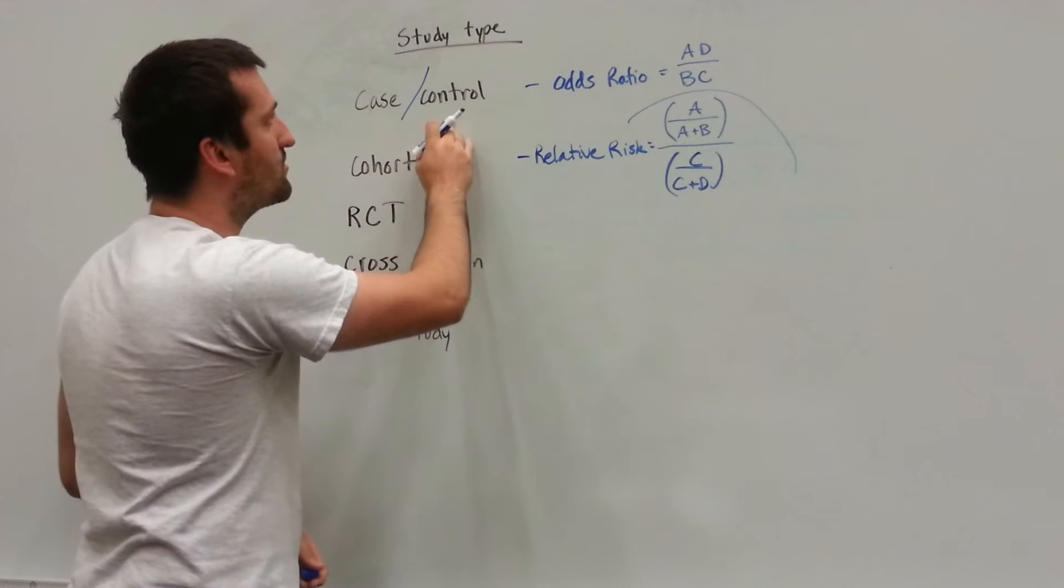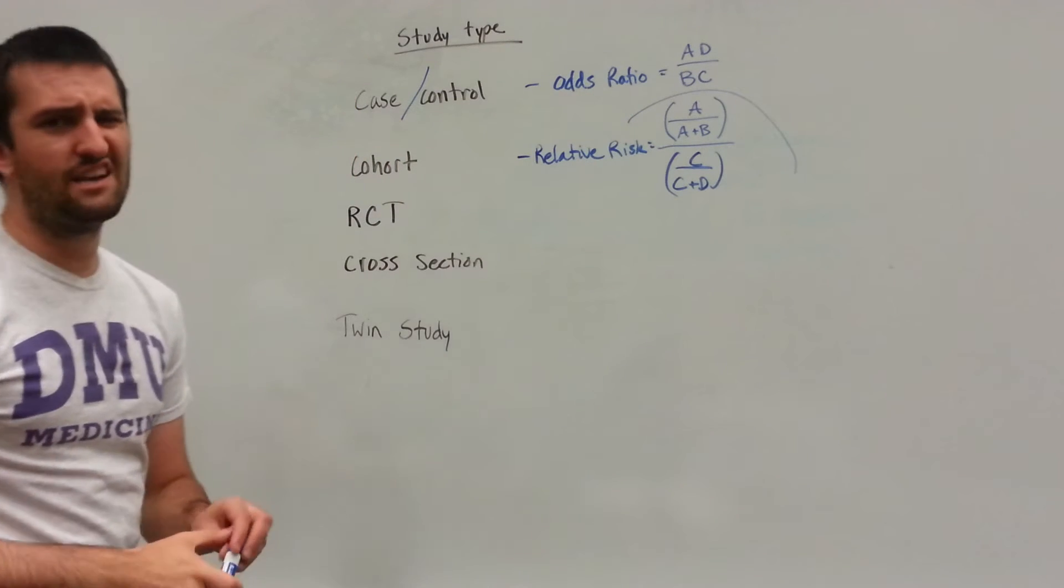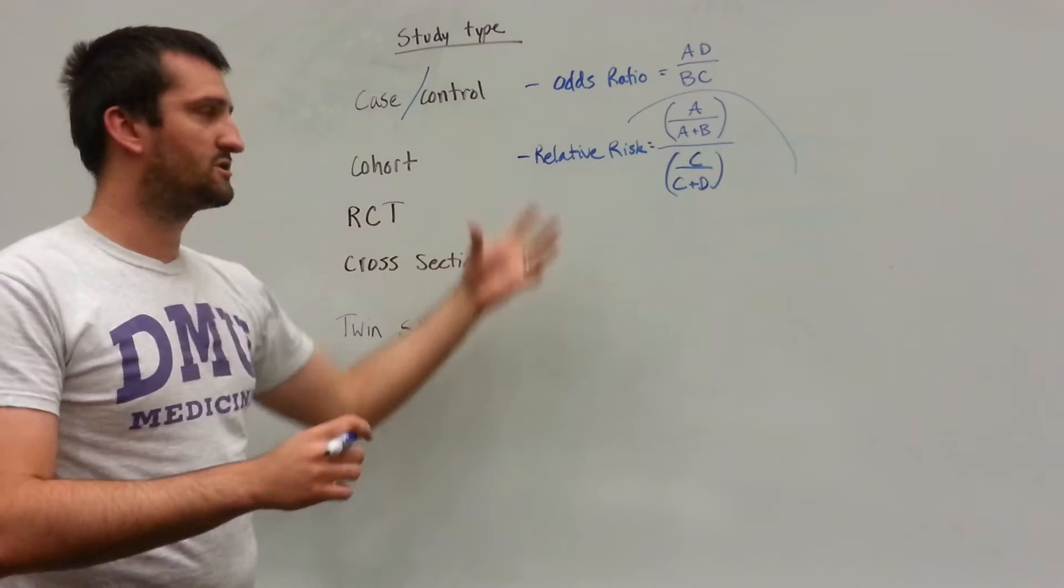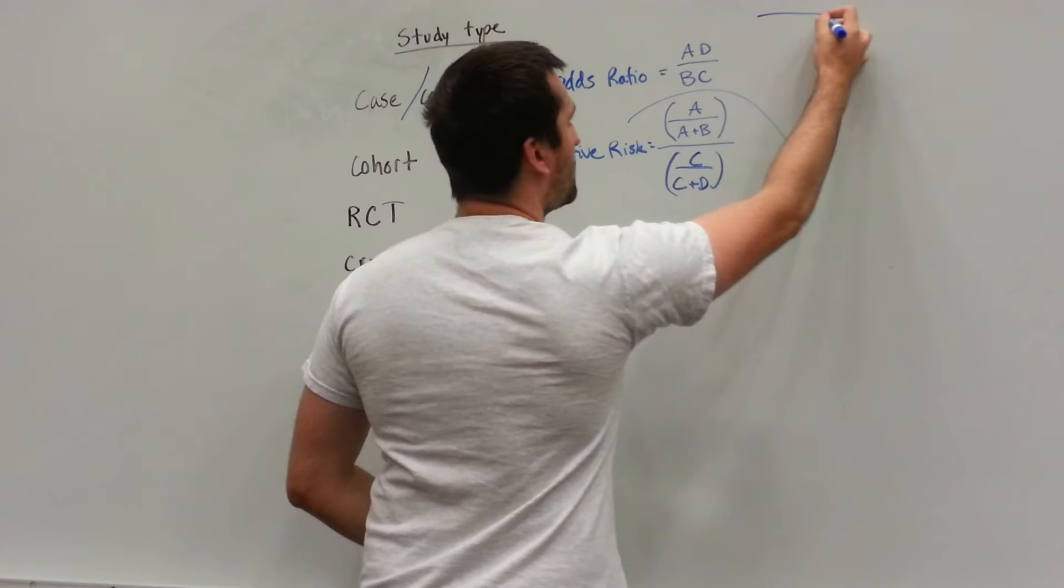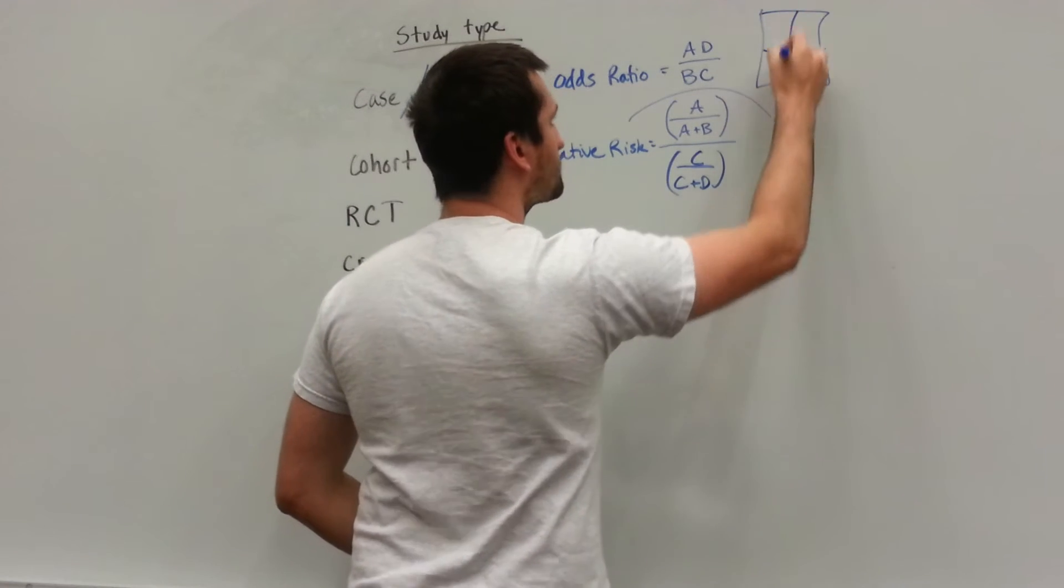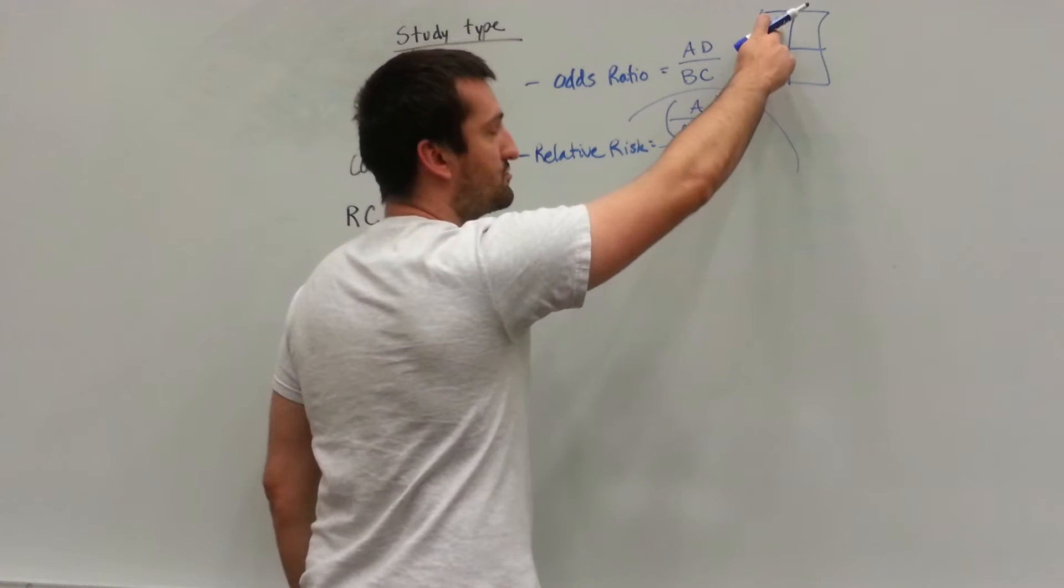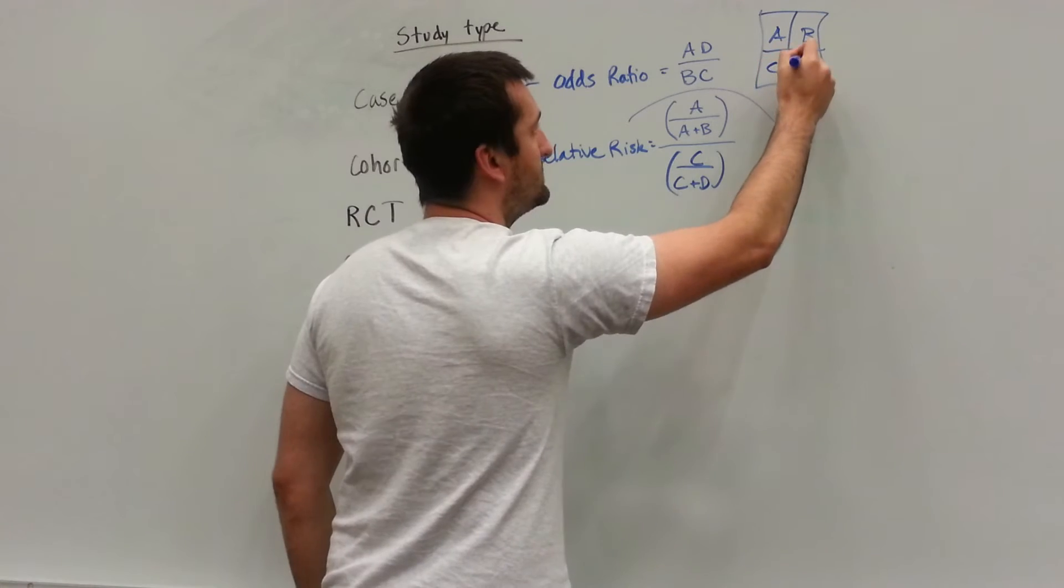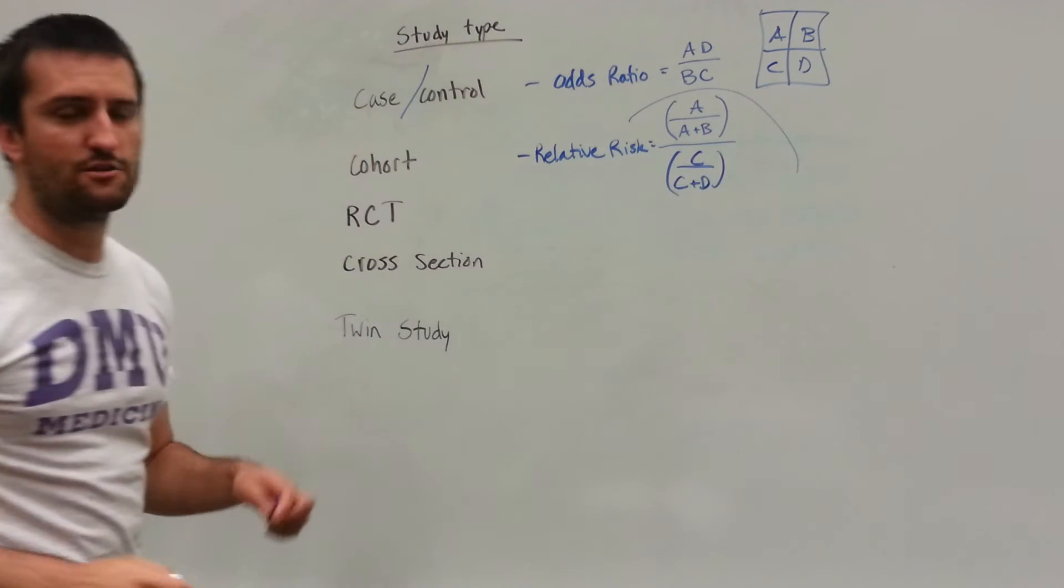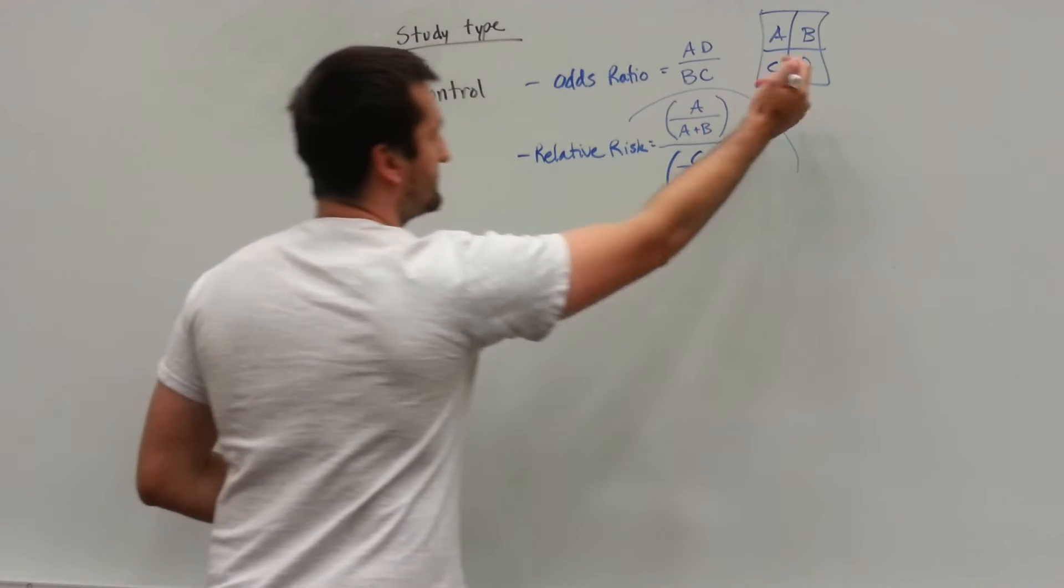So for case control studies, they're going to use odds ratio. Now I did it in a different video, a Punnett square, and it explained what A, B, C, D is. So if I had a Punnett square here with disease up here and testing down here, this would be your true positives. This would be A, B, C, and D. So that's where that comes up, the A, B, C, D system comes up with.